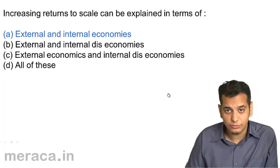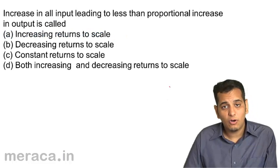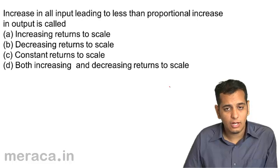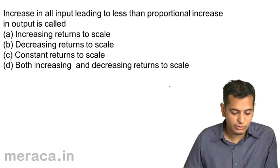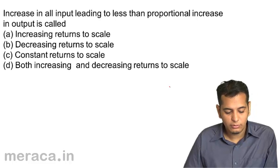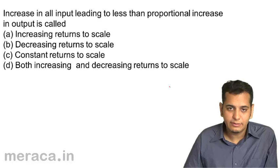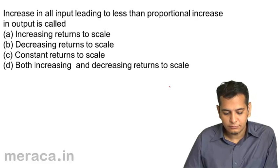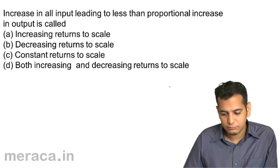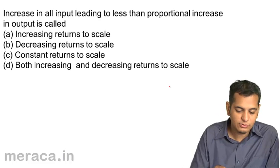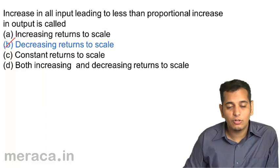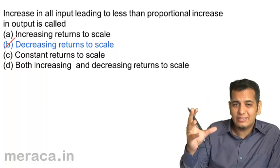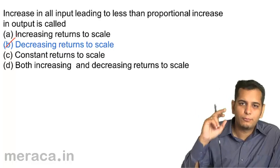An increase in all inputs leading to a less than proportional increase in output is called: a) increasing returns to scale, b) decreasing returns to scale, c) constant returns to scale, or d) both increasing and decreasing returns to scale. The answer is decreasing returns to scale, because output is increasing but not in proportion to the increase in inputs.